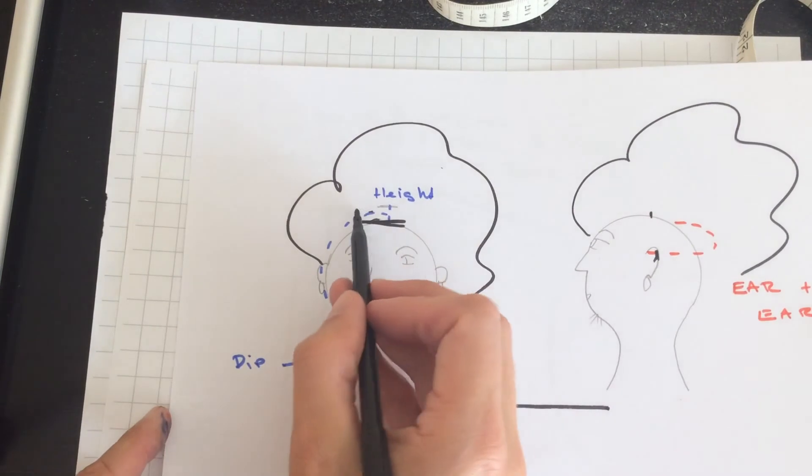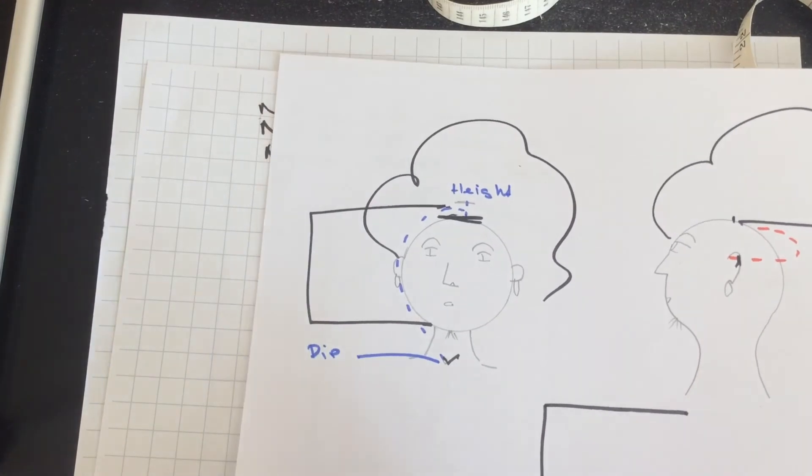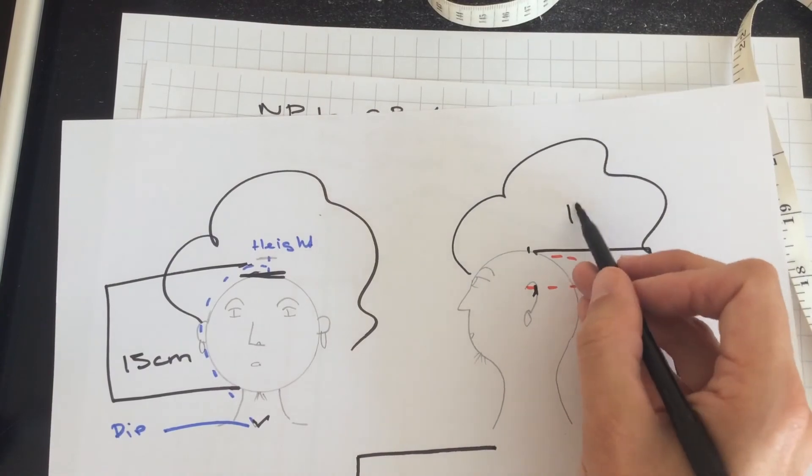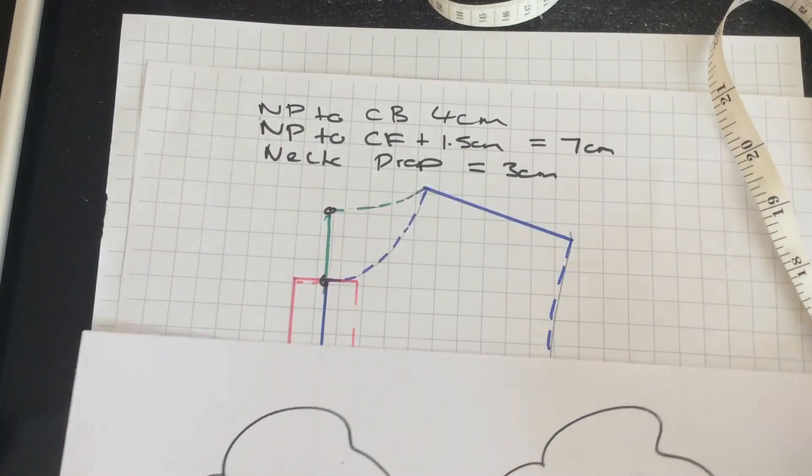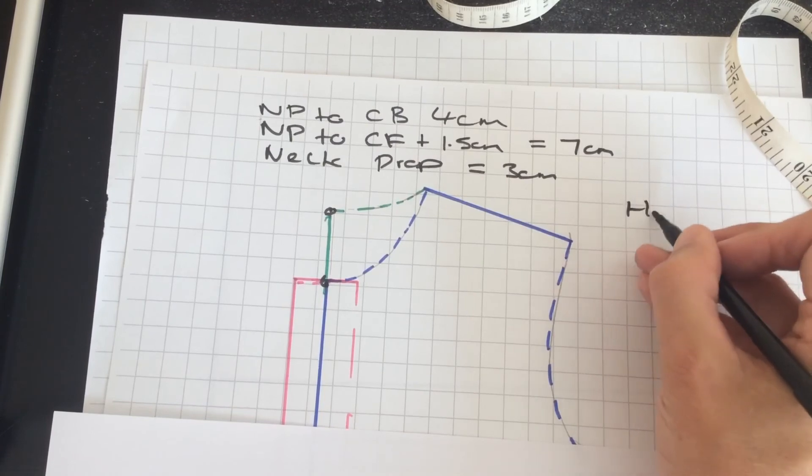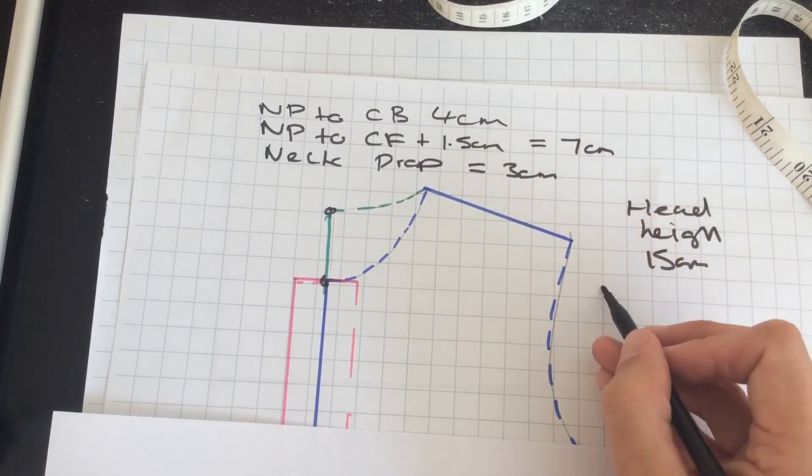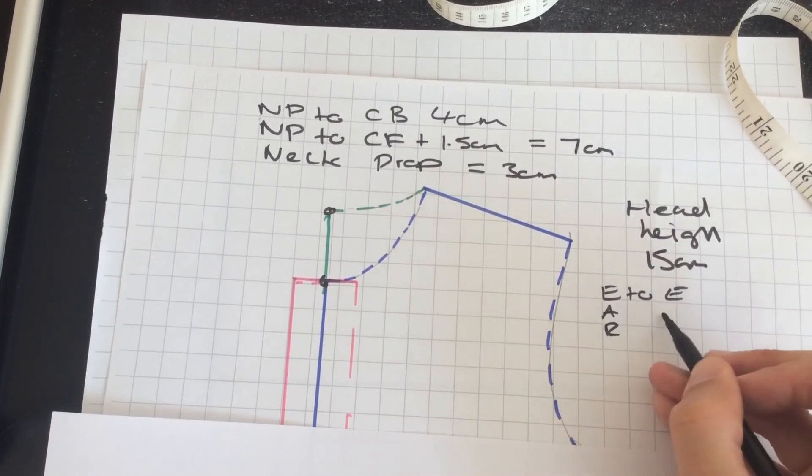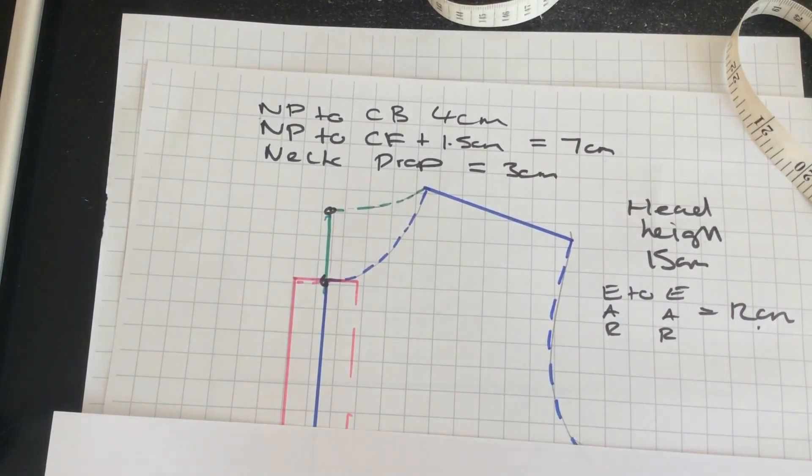For these measurements, I'm going to use 15 centimeters and about 12 centimeters. This is all obviously not in real scale, so we have those measurements as well. So the head height is 15, and ear to ear it's about 12 centimeters, so we've got those measurements there.